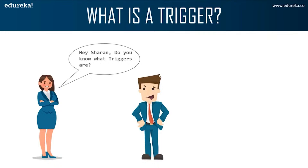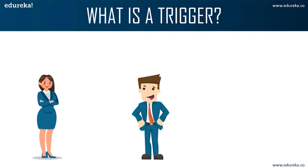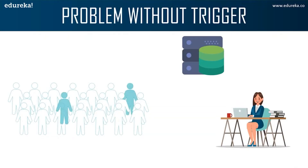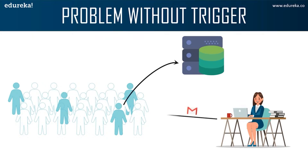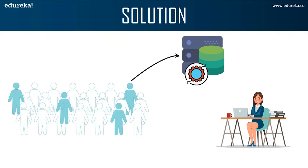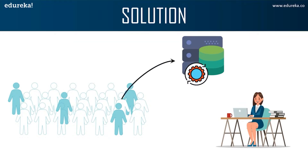Here we can see Anna is asking Sharon about triggers. Sharon imagines a trigger as falling dominoes. Anna is a marketing officer in a company. When new customer data is entered into the company's database, she has to send a welcome email to each new customer. If it's one or two customers, Anna can do it manually, but what if the count is more than a thousand? It will be repetitive and tiring. In such a scenario, triggers come in handy. Anna can easily create a trigger which will automatically send a welcome email to new customers once the data is entered into the database, and she doesn't have to monitor the trigger frequently.